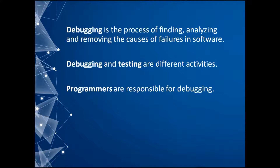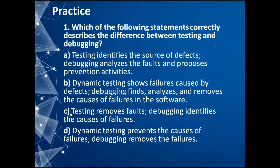Debugging is the process of finding, analyzing, and removing the causes of failures in software. Debugging and testing are different activities. When a tester finds a defect, the developer has to fix it. The developer has to find the part of the code that has a defect and modify it to make it work properly. So programmers are responsible for debugging.